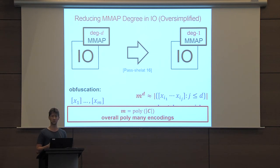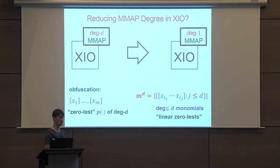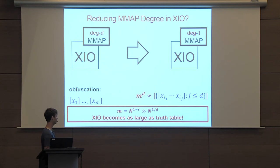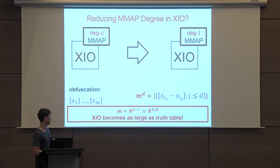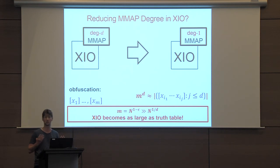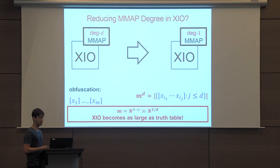Now, if you try to do the same with XIO instead of IO, the approach breaks down. You can still write all the monomials, but the problem is that in XIO the number of encodings M does not only scale with the circuit size but also with the truth table. It may be much larger than the truth table to the power 1/D, which means M^D is simply too large — it would completely trivialize the construction, making the obfuscation as large as the entire truth table.